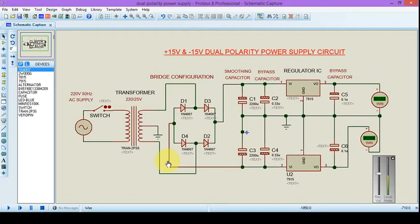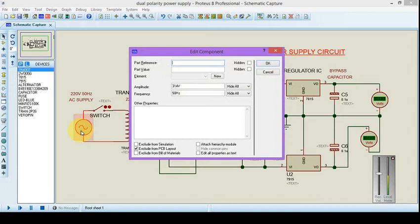We start off with the AC power supply. The properties are 314 volts amplitude with 50 Hertz of frequency. That's what is in most of the countries.